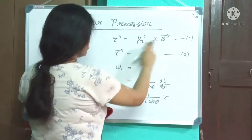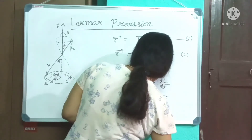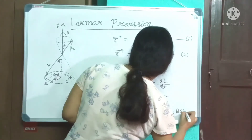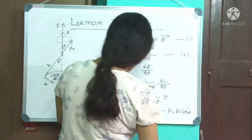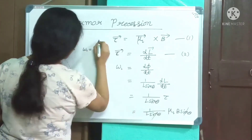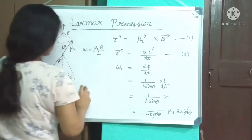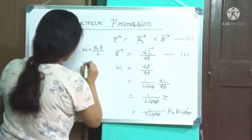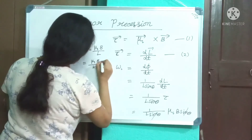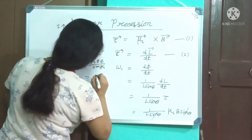From expression 1, τ equals μ_L × B, and if θ is the angle between μ_L and B, then τ equals μ_L B sinθ. Substituting into our expression, sinθ cancels, giving ω_L equals μ_L B / L, or equivalently μ_L B / 2m × μ_L.